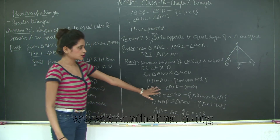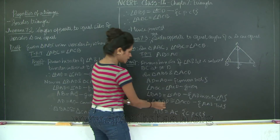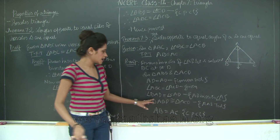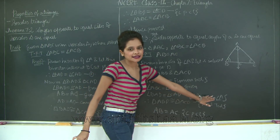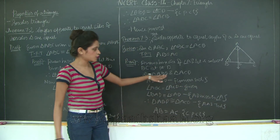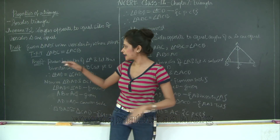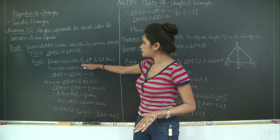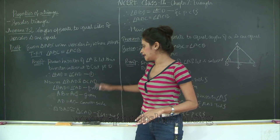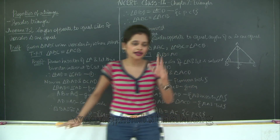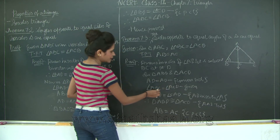Two things to notice here. First, when writing the proof you can either directly mention that AD bisects angle A within the congruence step, or you can first state that angle BAD equals angle CAD and mark it as step 1, then reference it later - as we did in the earlier proof. Second, although we are given that angle ABC equals angle ACB, when proving congruency of triangle ABD we write angle ABD instead of ABC, and angle ACD instead of ACB, because point D lies on line segment BC.